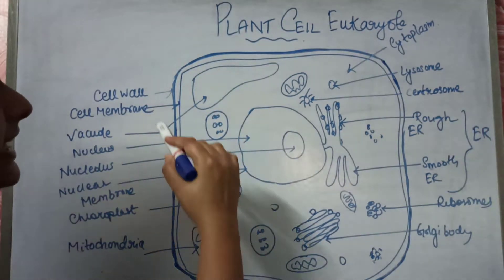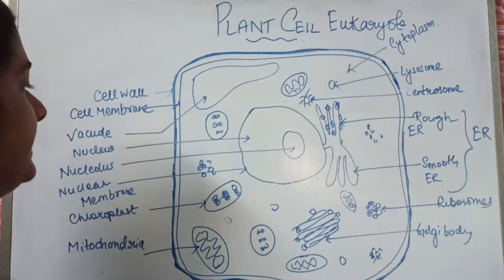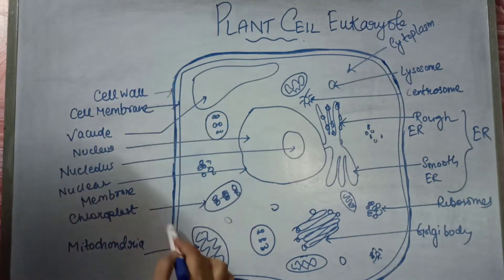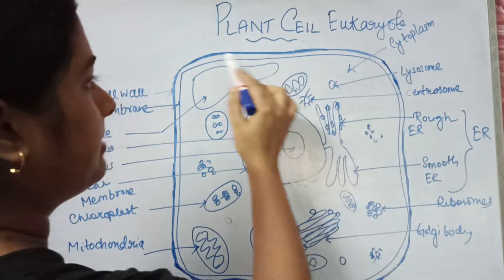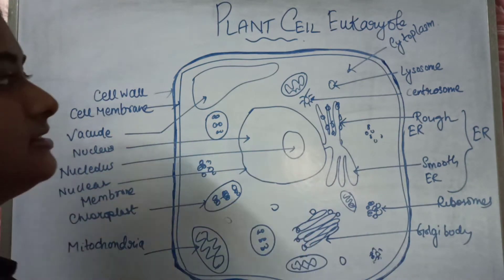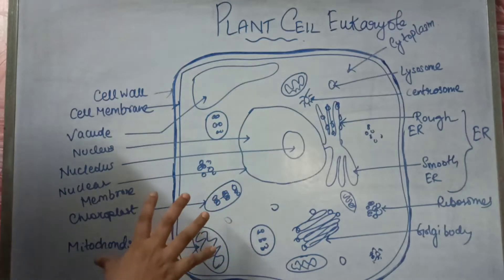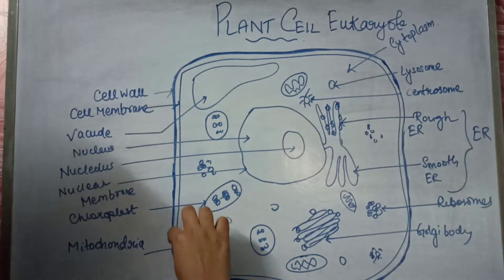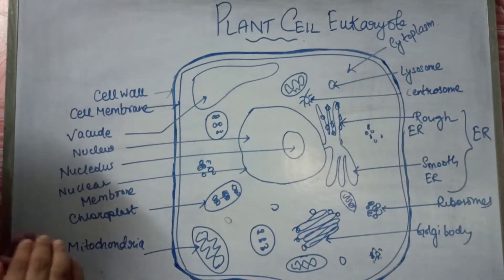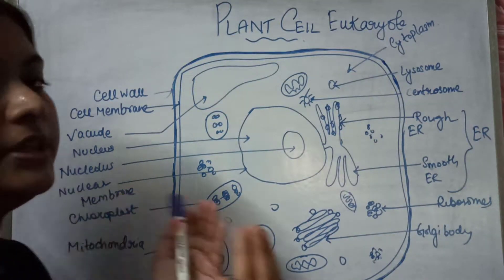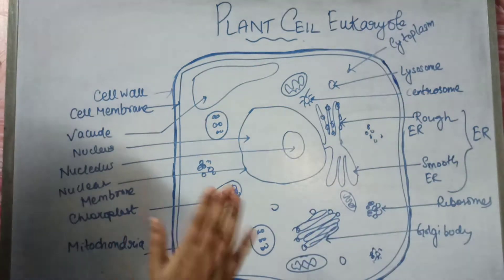First, beginning with the cell membrane. The cell membrane, or plasma membrane, is present in plant cells as well as animal cells. This is the membrane that keeps the contents of the cytoplasm within itself.